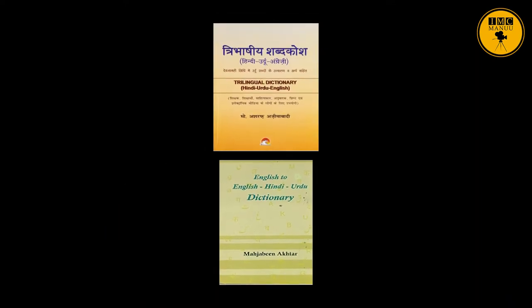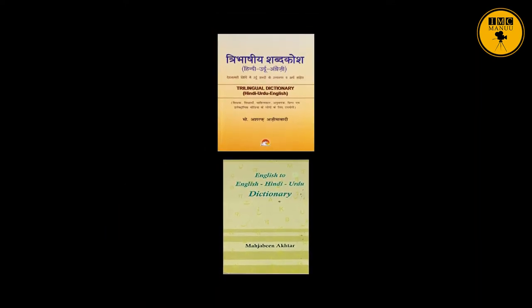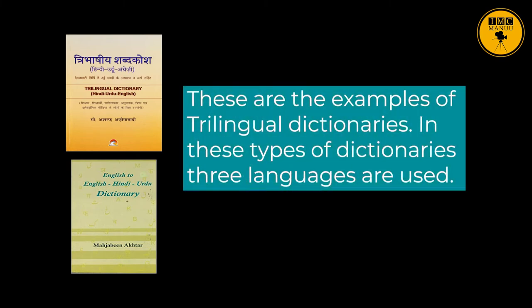You can find many bilingual dictionaries in other languages as well, such as English to Marathi, English to Hindi, English to Arabic, or English to Persian Dictionary. In bilingual dictionaries, two languages are used. In trilingual dictionaries, three languages are used. For example, the English-Hindi-Urdu Dictionary was developed by Mahjabeen Akhtar.